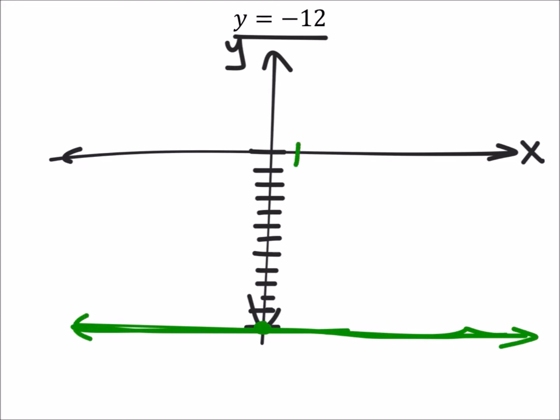For example, if that's 1, then this point right here would be 1, negative 12. See that? And this point right here would be 0, negative 12. In all of these ordered pairs, the y value just needs to be negative 12, which is what this green line is.